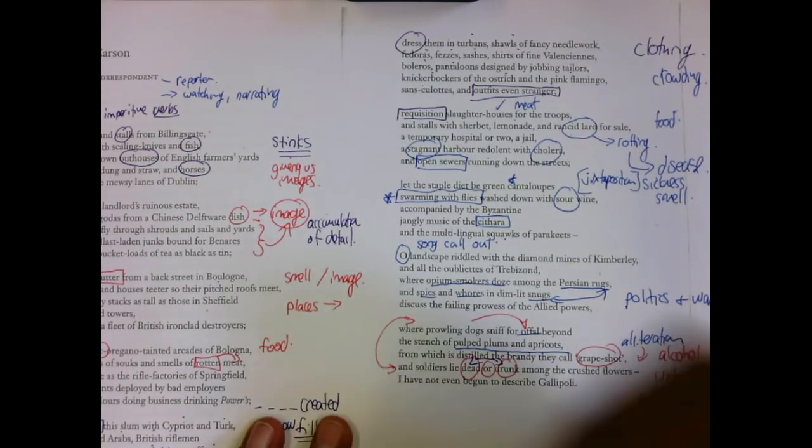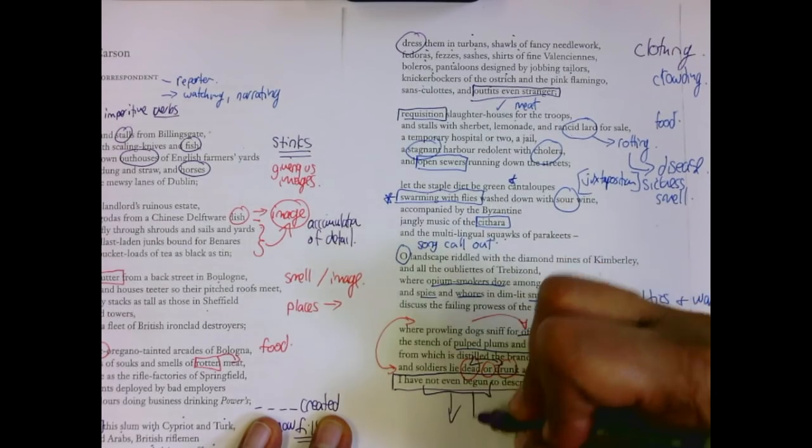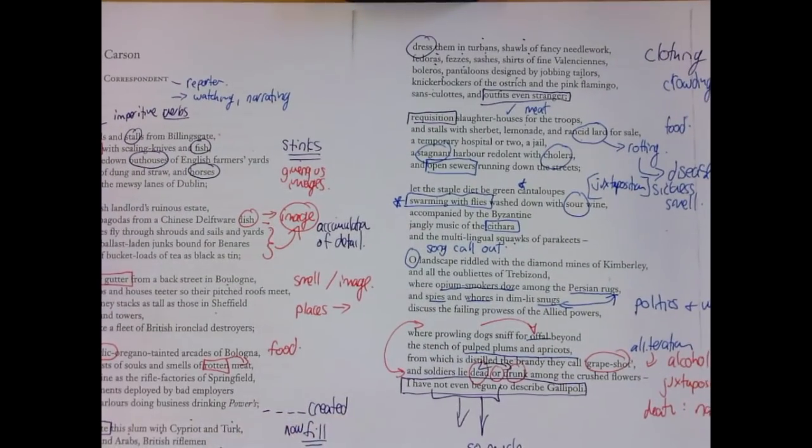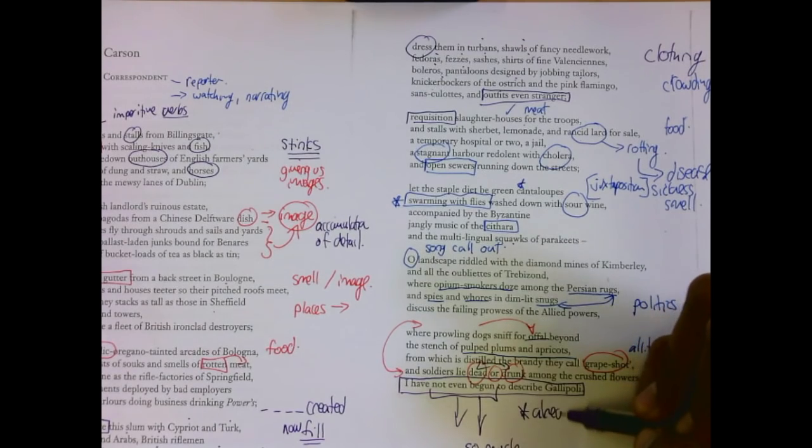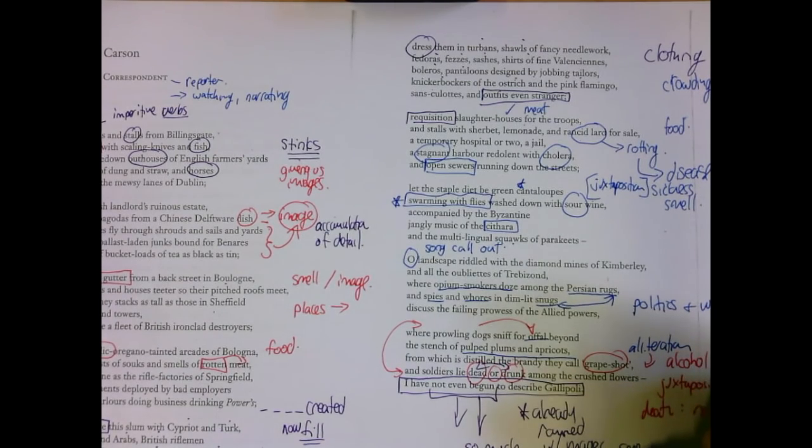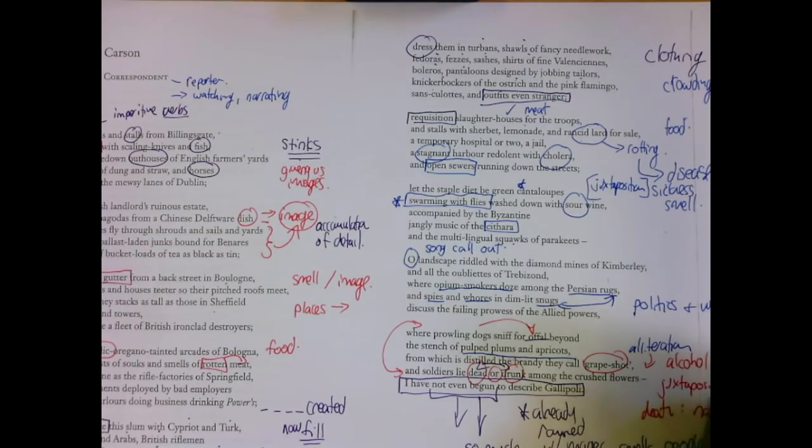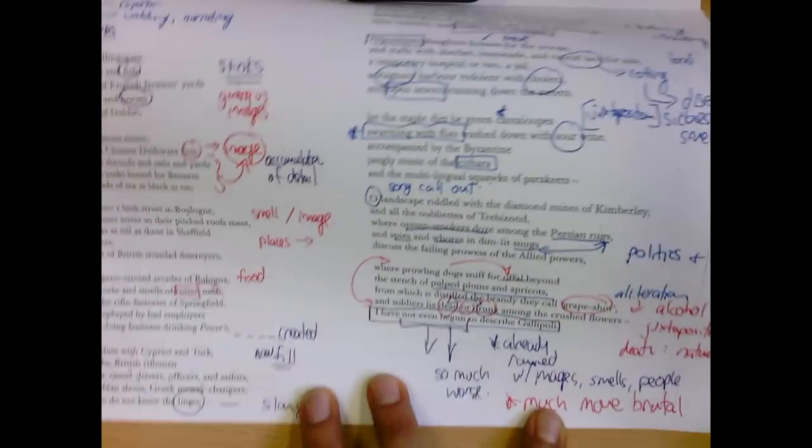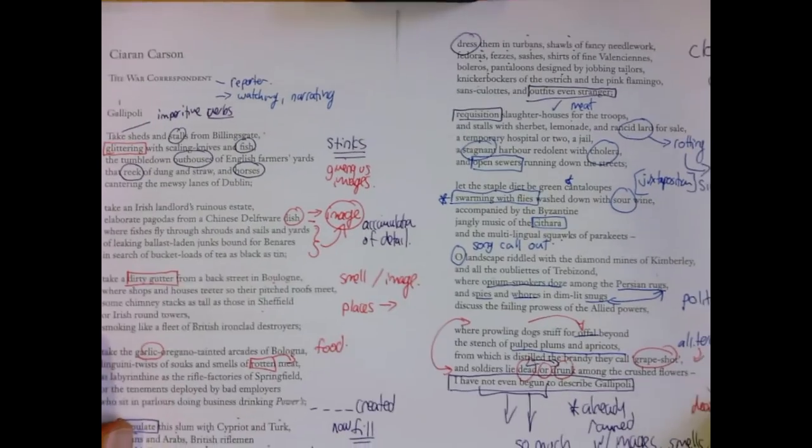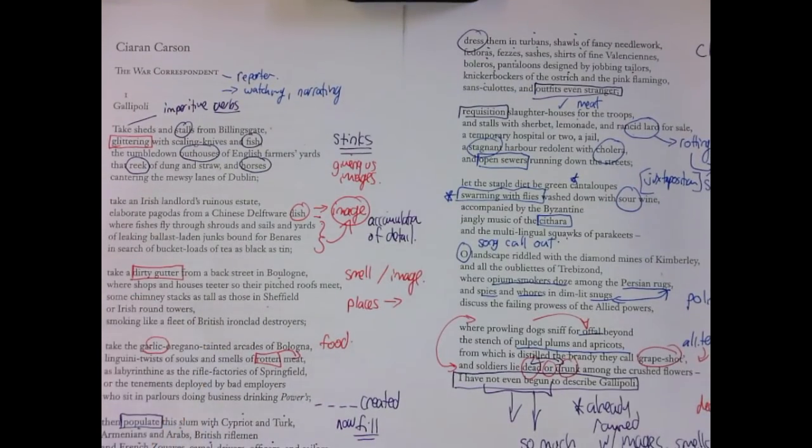And then you get the final line of this section. I have not even begun to describe Gallipoli. And it's the not even begun. Begun meaning it's so much worse. But he knows that he's tried to describe it so much. He's already rammed this section with images, smells, people. And he's actually saying it's much more brutal, much more brutal, unforgiving, and horrible than even he's begun to describe. This poem shows war at its worst as not honorable, not violent, but just an accumulation of people and things and animals and death.